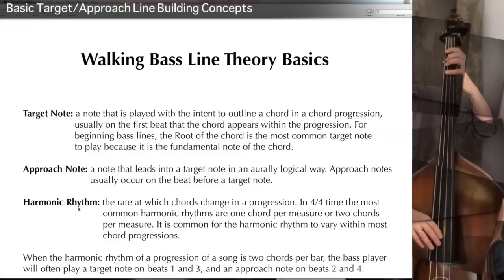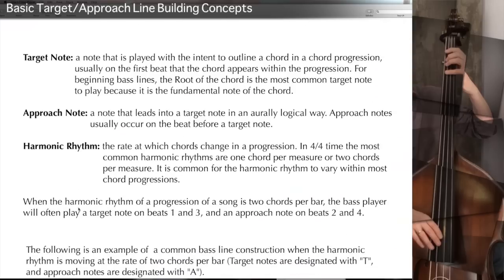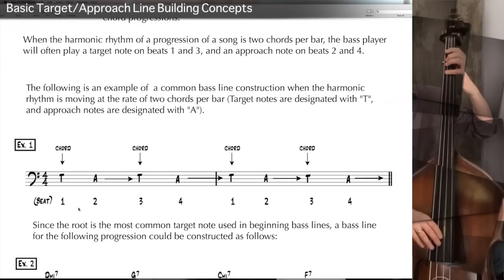In 4/4 time, the most common harmonic rhythms are one chord per measure or two chords per measure, and it's common for the harmonic rhythm to vary within most chord progressions. When the harmonic rhythm is two chords per bar, the bass player will often play a target note on beats 1 and 3, and an approach note on beats 2 and 4. In example 1, target notes are designated with a T and approach notes with an A, showing the target on the strong beats and an approach note leading into each target.